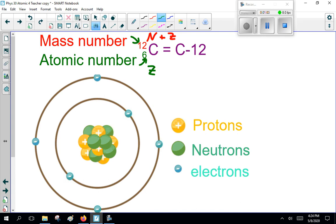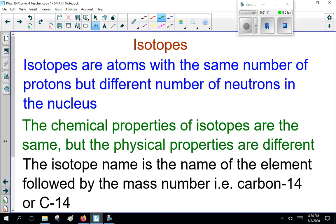And remember, of course, protons and neutrons are here in the nucleus. The electrons are in orbit around or outside. Now, just remember, isotopes.